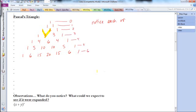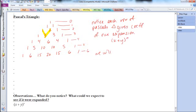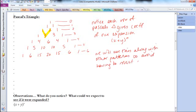Notice that each row of Pascal's triangle gives the coefficient of our expansion, x plus y to the nth power. We will use this along with other patterns to avoid having to multiply out these binomial expansions.